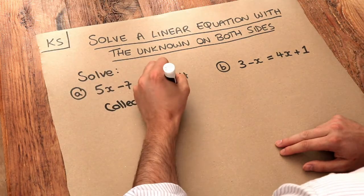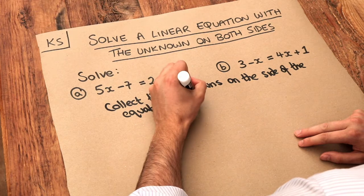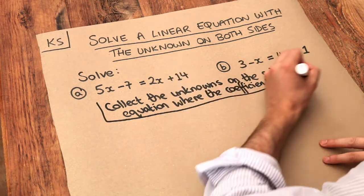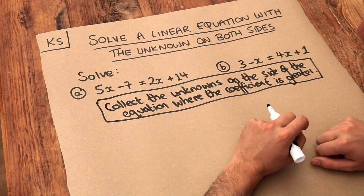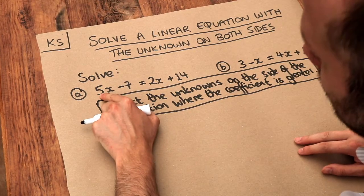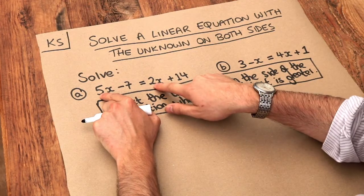Collect the unknowns on the side of the equation where the coefficient is higher. And I'll explain what I mean by coefficient. Now the coefficient of a term is just the number that appears in front of it. So the coefficient of this term here is 5, it's the number that appears on the front. The coefficient of this X term here is 2, it's the number on the front.